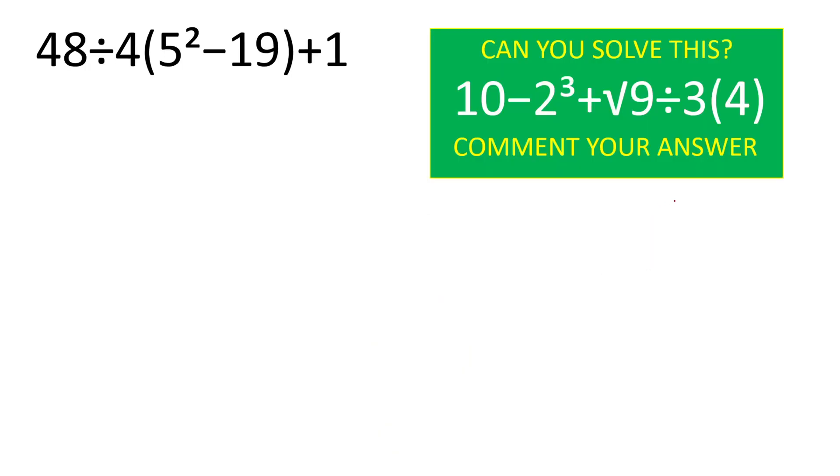Time's up. Here as we can see we will follow order of operations. Simply, first preference will be given to this parenthesis which has 5 squared minus 19. And here 5 squared will give 5 times 5 which equals to 25.